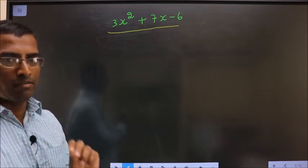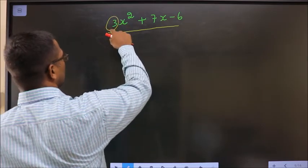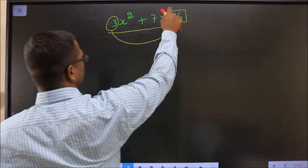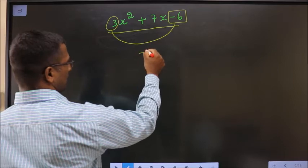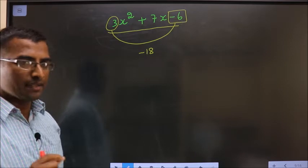See, in that step 1, whatever you have here should be multiplied to the constant that is minus 6 in this case. So 3 into minus 6 is minus 18. Clear with step 1. Next step.